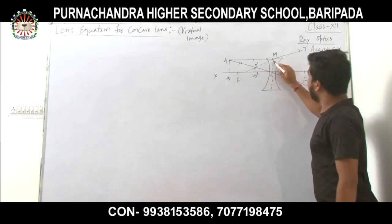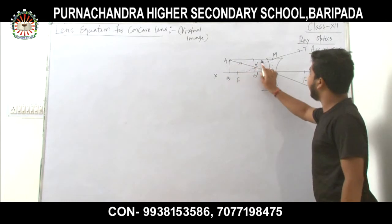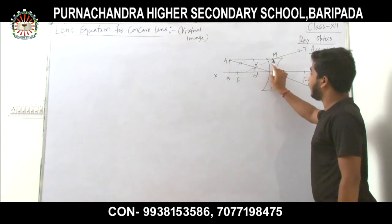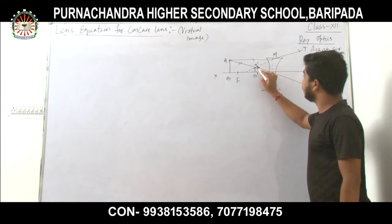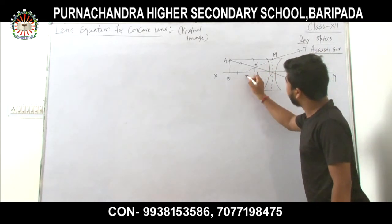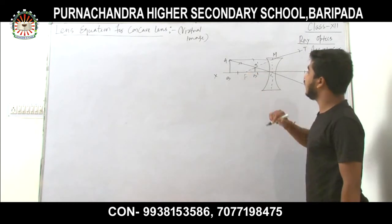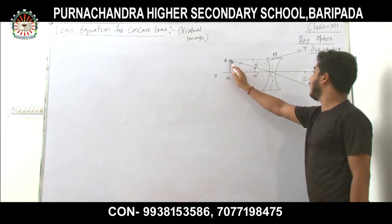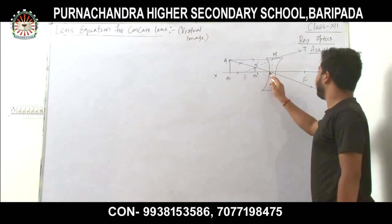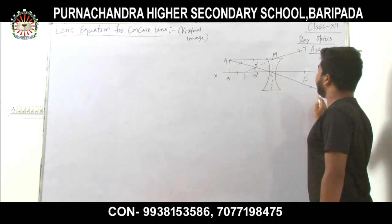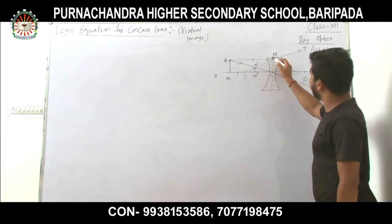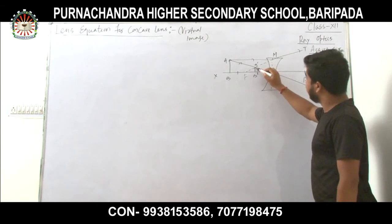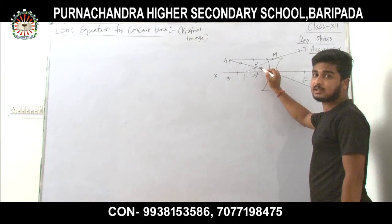If I backtrace the parallel ray of light after refraction, it will appear to come from the focus F. Another ray of light incident through the optical center will go undeviated. These two refracted rays, when extended, meet each other at point A dash.